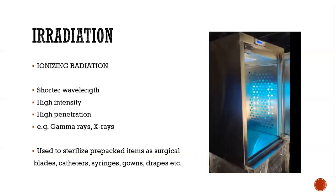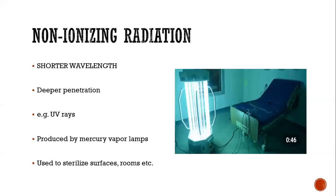The last variety is irradiation techniques of sterilization. Radiation used is of two types: ionizing and non-ionizing. Ionizing radiation uses shorter wavelengths, high intensity, and high penetrating radiation to destroy microorganisms, such as gamma rays and X-rays. It is used to sterilize pre-packed items such as surgical blades, catheters, syringes, gowns, and gloves. Non-ionizing radiation uses longer wavelengths with lower energy and penetration, such as ultraviolet rays. Ultraviolet rays produced by mercury vapor lamps are used to sterilize surfaces and rooms.